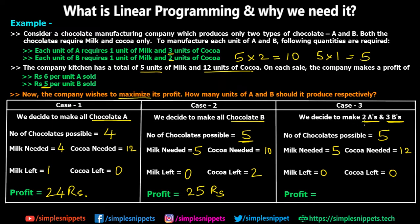Now let's calculate the profit for case three. For two units of chocolate A: six times two equals twelve rupees. For three units of chocolate B: five times three equals fifteen rupees. Total profit is twelve plus fifteen, which gives us 27 rupees. Case three gives the maximum profit, because we have used all the resources in the best possible way by creating both types of chocolates to optimize the process.